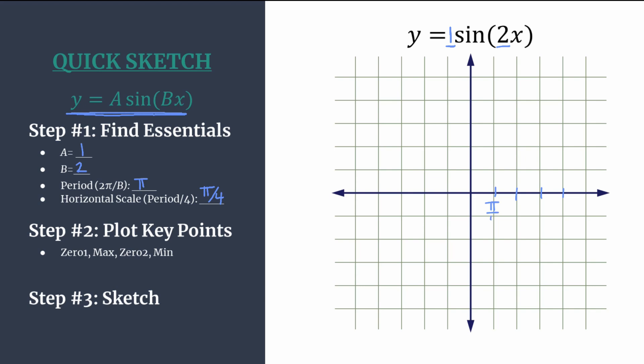So count 1 pi over 4, 2 pi over 4 reduces to pi over 2, 3 pi over 4, 4 pi over 4 reduces to pi. We know we're on the right track because the period is pi and this is our fourth tick mark. That'll be one complete cycle.